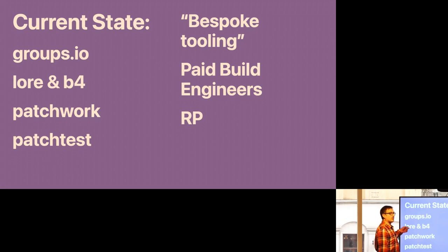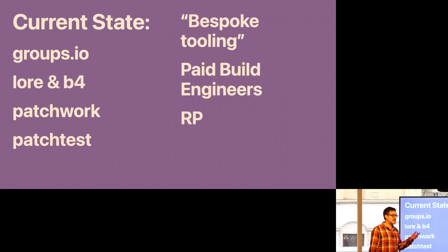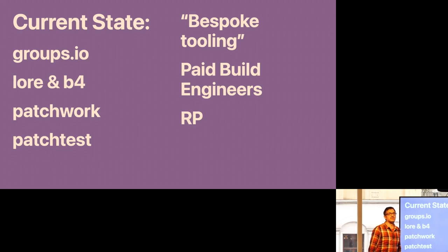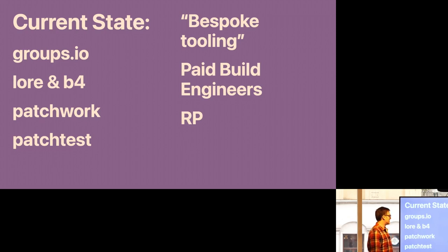We've also got Lore, which is basically a mail archiver, but it's machine readable. Patches can be sucked out of there, which is much better than Groups.io, by a tool called B4. So if you've got a message ID, you can just grab the patches and apply them locally. That's not bad.